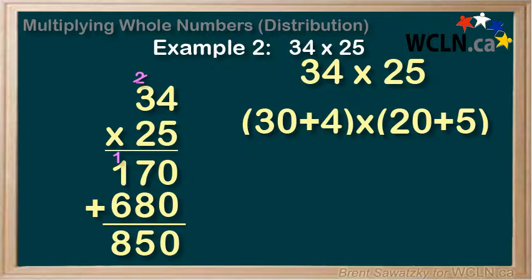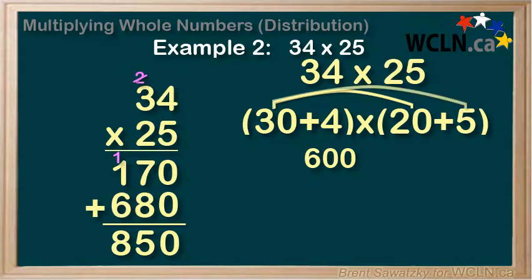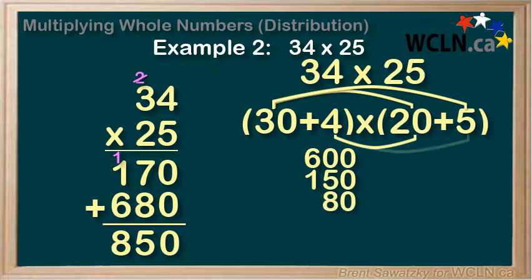Let's start with the 30. We need to multiply it by each item in the second set of brackets. So, 30 times 20 equals 600, 30 times 5 equals 150, 4 times 20 equals 80,